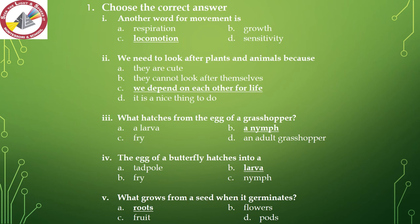Number 3 — what hatches from the egg of a grasshopper? Options are: a larva, a nymph, fry, or an adult grasshopper. The correct answer is option B — a nymph.